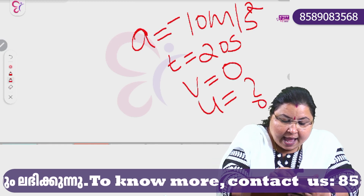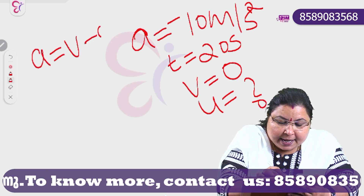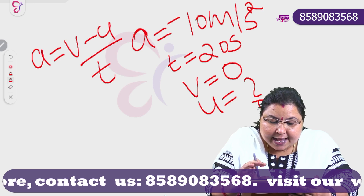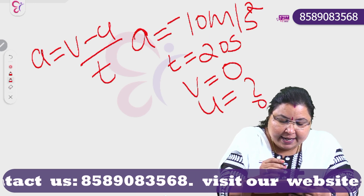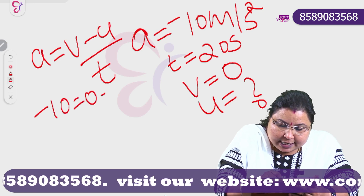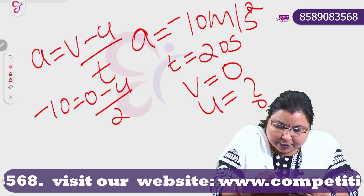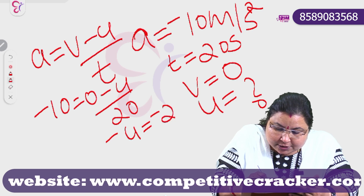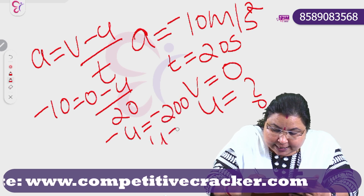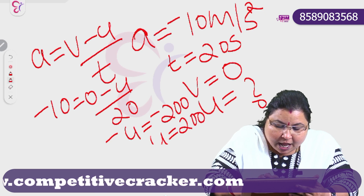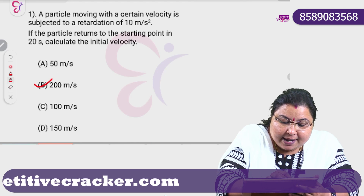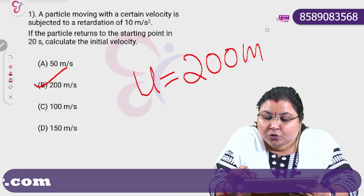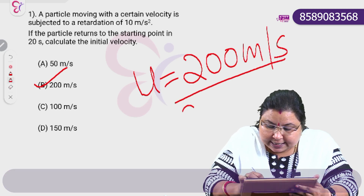Where do we want to start? Acceleration A is equal to V minus U divided by T. Let's substitute: minus 10 is equal to 0 minus U divided by T is 20 seconds. So minus U is equal to minus 200. U is equal to 200. Option B is the answer — 200 m per second is the initial velocity.